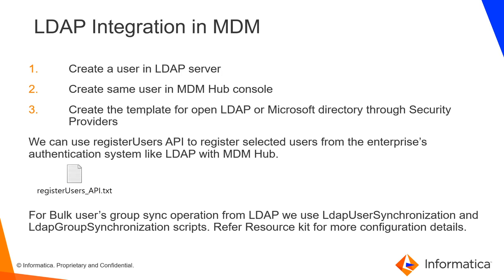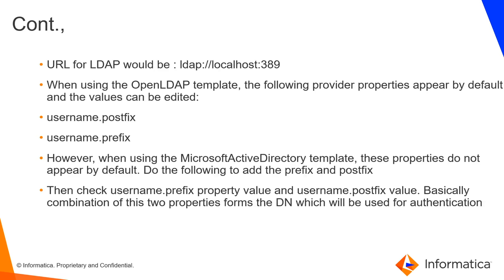To integrate LDAP in MDM, there are common steps to follow. First, create a user in the LDAP server — this is done with the help of your LDAP team. Next, create the same user in MDM Hub Console. Third, create the template for OpenLDAP or Microsoft Active Directory through Security Providers. You can also use the Registered User API to register selected users for enterprise authentication systems. For bulk user and group sync operations from LDAP, use the LDAP User Synchronization and LDAP Group Synchronization scripts. Refer to the Resource Kit for more configuration details.